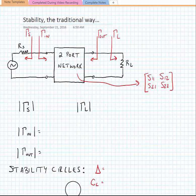We can represent the reflection coefficient looking towards the source as gamma_s, looking towards the input as gamma_in, looking towards the output as gamma_out, and looking towards the load as gamma_L. Traditionally for stability we want our gamma_s and gamma_L to be less than one.